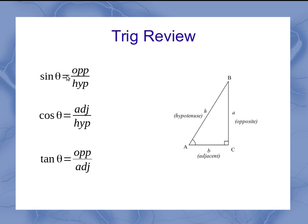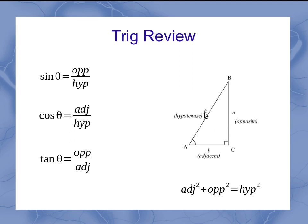Some people remember this using SOH-CAH-TOA, which is taught in geometry. We also have the Pythagorean theorem: the adjacent side squared plus the opposite side squared equals the hypotenuse squared — written as a² + b² = c² or h².